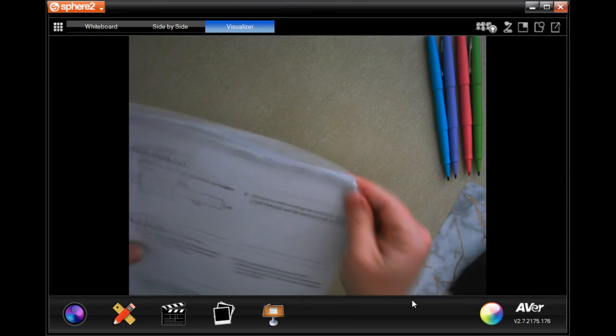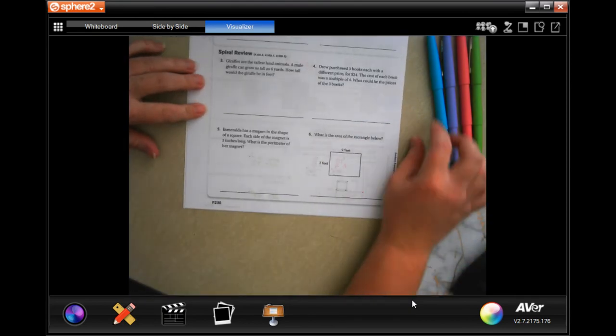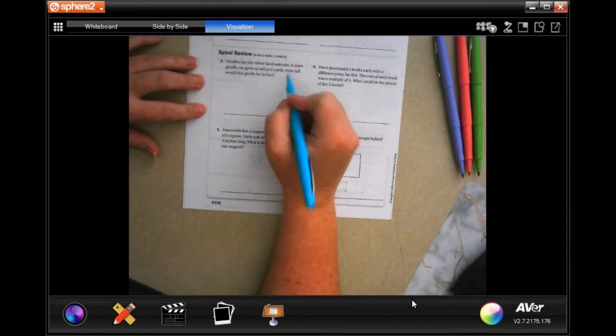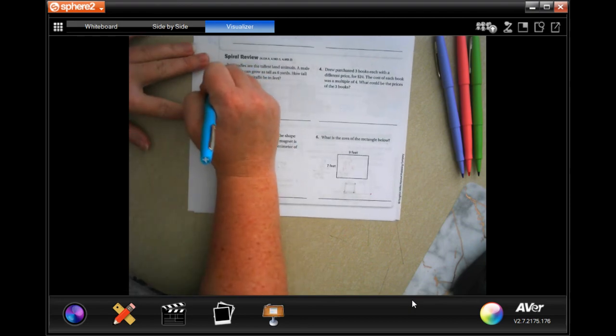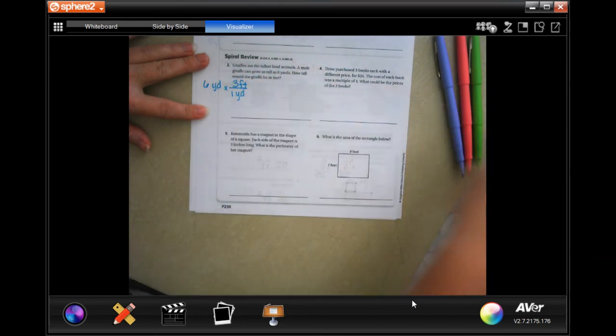You guys are going to do the lesson check just like always, and we're going to go down to this power review. It says giraffes are the tallest land animals. A male giraffe can grow as tall as 6 yards. How tall would a giraffe be in feet? So we're going to start with what it tells us. One yard is 3 feet.